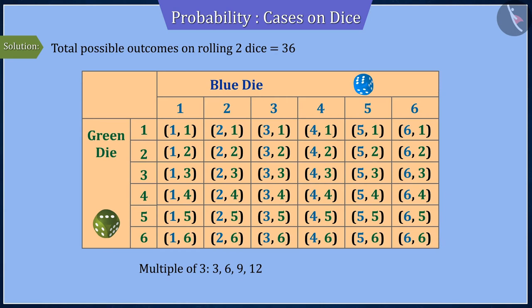Note that maximum 12 is taken here because rolling two dice gives the maximum sum of 12, which is a multiple of 3.